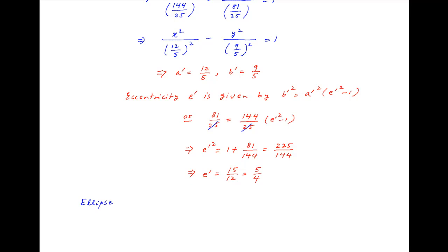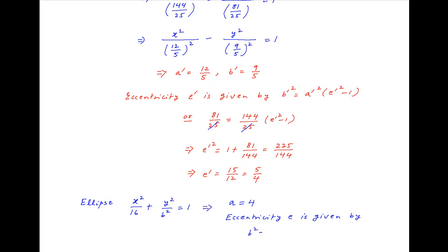Now, the equation of the ellipse is given as x²/16 + y²/B² = 1. Therefore, the length of the semi-major axis A is equal to 4 and the length of the semi-minor axis is equal to B. The eccentricity of the ellipse E is given by B² = A²(1 − E²).